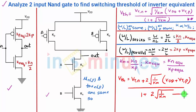So, this is my final expression for my switching threshold for a 2 input NAND gate for its corresponding inverter equivalent.